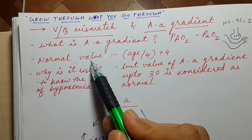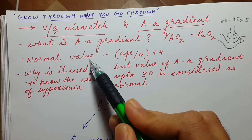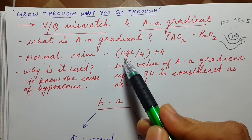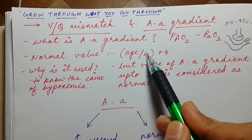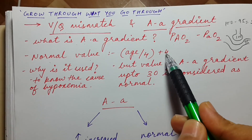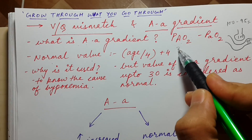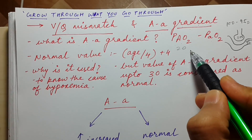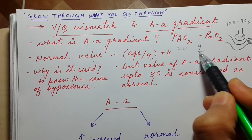Now, what is the normal value of AA gradient? The normal value is equal to age divided by 4, plus 4. So if the age of a person is 20, then the AA gradient will be 9.